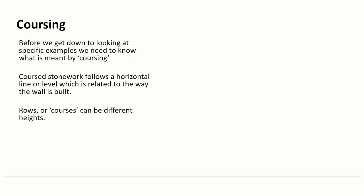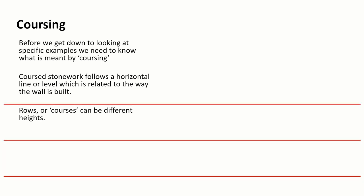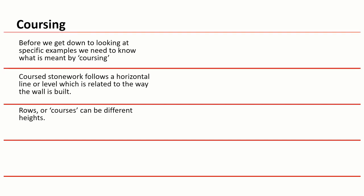But before we go down to looking at specific examples we need to know what's meant by coursing. Coursed stone follows a horizontal level which is related to the way the wall is built. Rows or courses can be different heights but they're always running horizontally. We'd refer to anything within a wall as being coursed meaning that it has a horizontal direction.